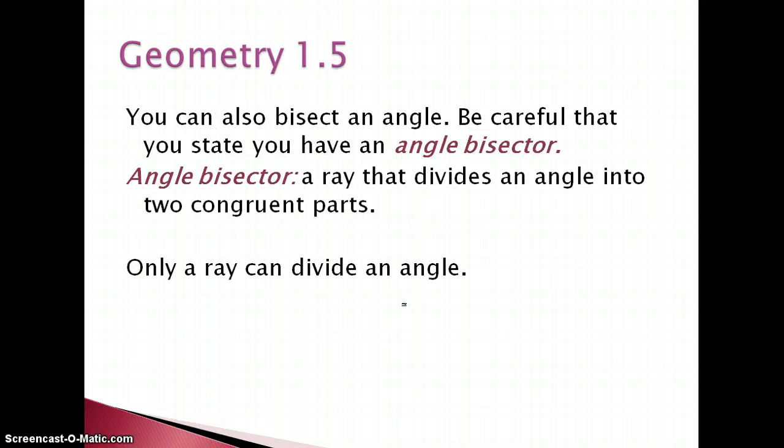You can also bisect an angle, but be careful that you state that you have an angle bisector. So a bisector in general is going to be with a segment, but an angle bisector with the word 'angle' in there makes it that it's part of an angle. So angle bisector is always going to be a ray, and it's dividing an angle into two congruent parts, so two congruent measures.